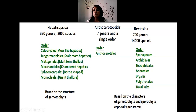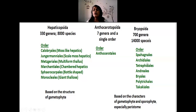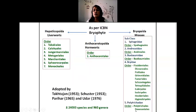Bryopsida has around 700 genera and 14,000 species. Members of Bryopsida are further classified based on the characters of the gametophyte and sporophyte — especially the different types of capsules and the peristome in the sporophyte. Orders include Pagnales, Archidiales, Tetraphidales, Andreales, Bryales, Polytrichales, and Takakiales. The subclass Bryidae is the largest, including several orders, and Polytrichales and Dawsoniales represent another order.